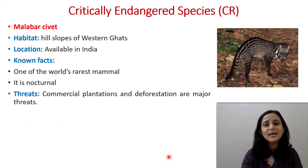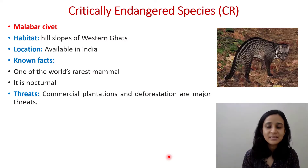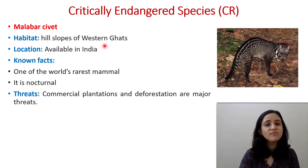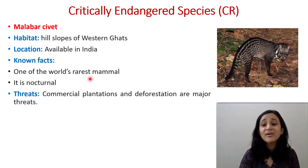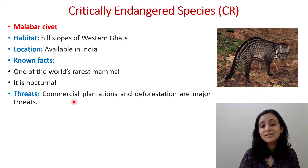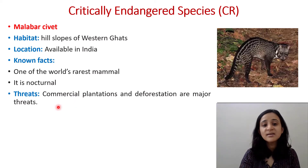Now I will explain some examples under the Critically Endangered species category. The first one is the Malabar Civet — its habitat is the hill slopes of the Western Ghats, located in India. Known facts: it is one of the world's rarest mammals and is nocturnal, roaming outside at night. Threats include commercial plantations and deforestation.